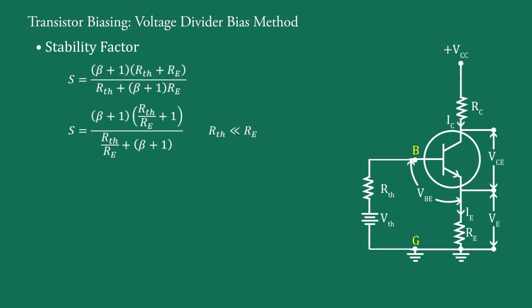Now, RTH is very very less than RE. Therefore, RTH upon RE equal to 0. Therefore, we get S equal to beta plus 1 into 1 upon beta plus 1 and that is 1. This is the smallest possible value of S and leads to the maximum possible thermal stability.